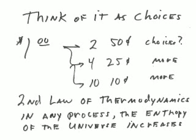If I instead had four quarters, I could pull out zero, 25 cents, 50 cents, 75 cents, or a whole dollar — so I'd have more choices with four quarters rather than two 50-cent pieces. If I had ten dimes, I could pull out zero, ten, twenty, thirty, forty, fifty, sixty, seventy, eighty, ninety, or a whole dollar. So I'd have even more choices.